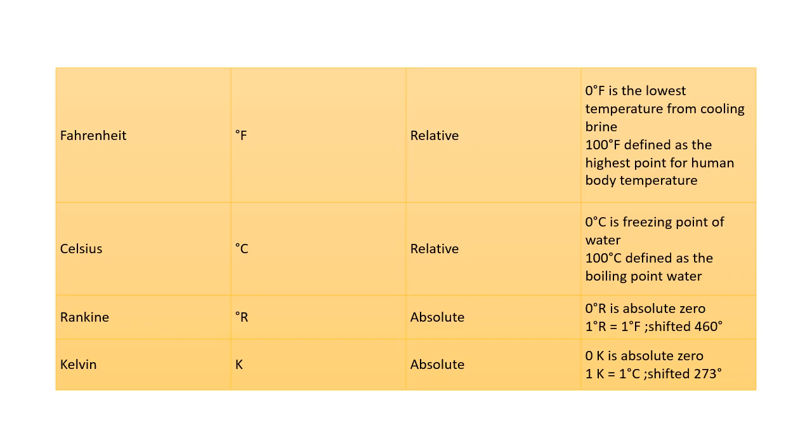Fahrenheit is primarily used outside for weather. Rankine and Kelvin are both absolute temperature scales. They're not used as often as Celsius and Fahrenheit in everyday life. But Rankine would be more connected to Fahrenheit in calculations and Kelvin would be more connected to Celsius, as you'll see in the later equations.